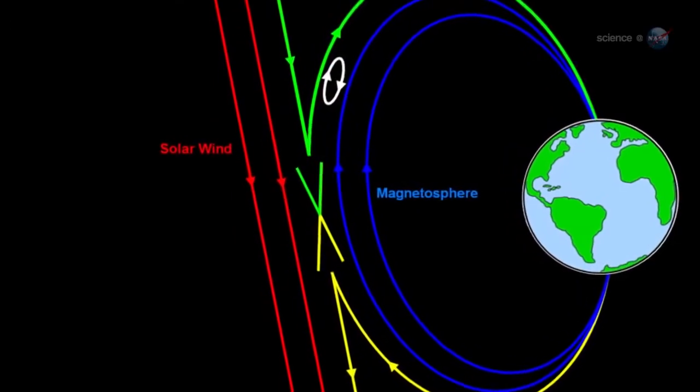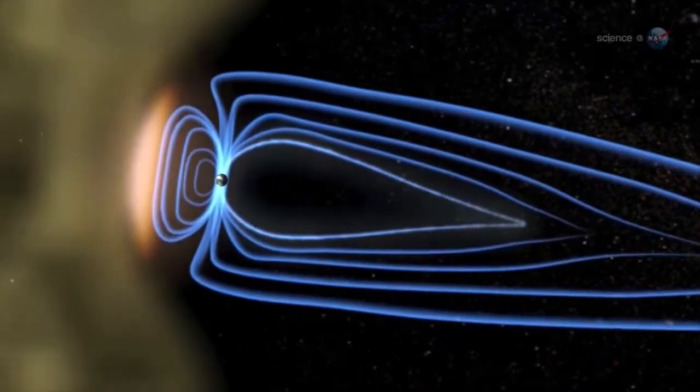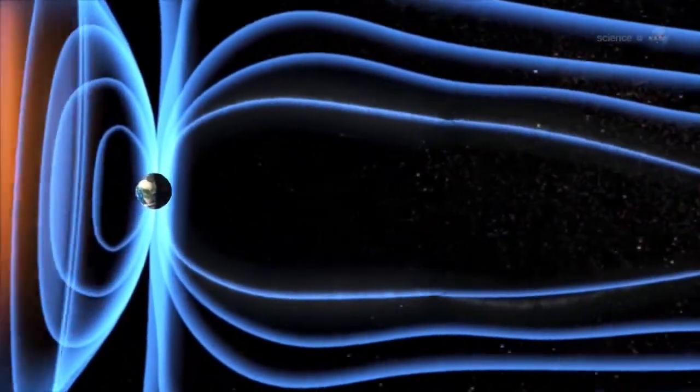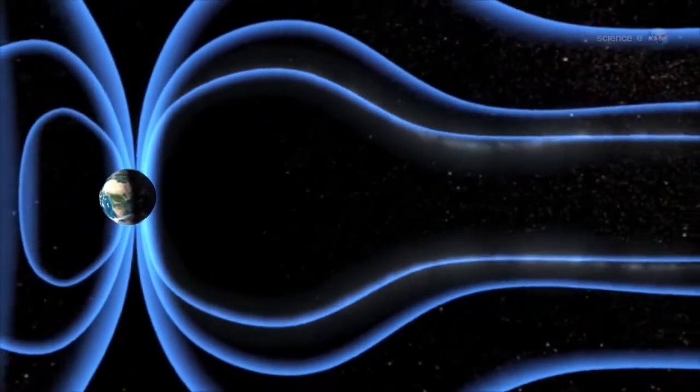X-points are where the crisscross takes place. The sudden joining of magnetic fields can propel jets of charged particles from the X-point, creating an electron diffusion region.